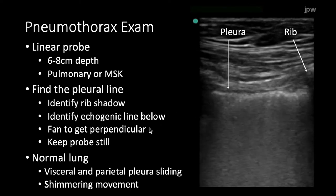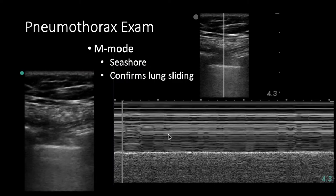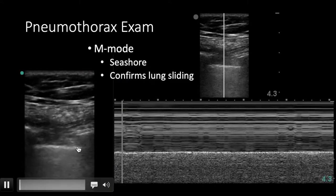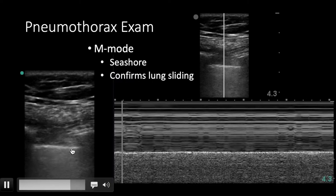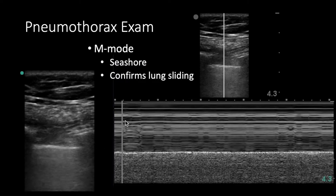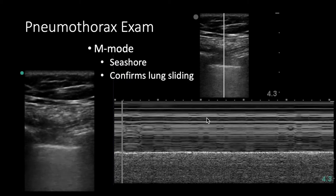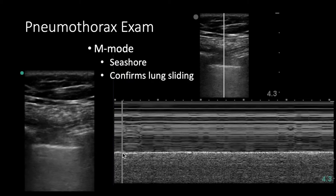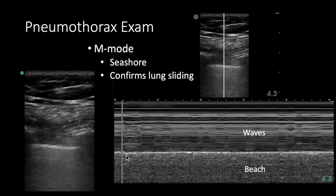Here's another example — rib shadow, so this must be the pleural line. It can sometimes be harder to tell if there's shimmering, so I'll often encourage you to use M-mode: drop a single line through and measure the movement over time. What you see is subcutaneous tissue, a bright white pleural line, and because there's movement, it creates a granular pattern. Some people call this the seashore sign — waves approaching the beach. This granular beach pattern means there is pleural sliding, the visceral and parietal pleura are sliding, and that rules out pneumothorax.